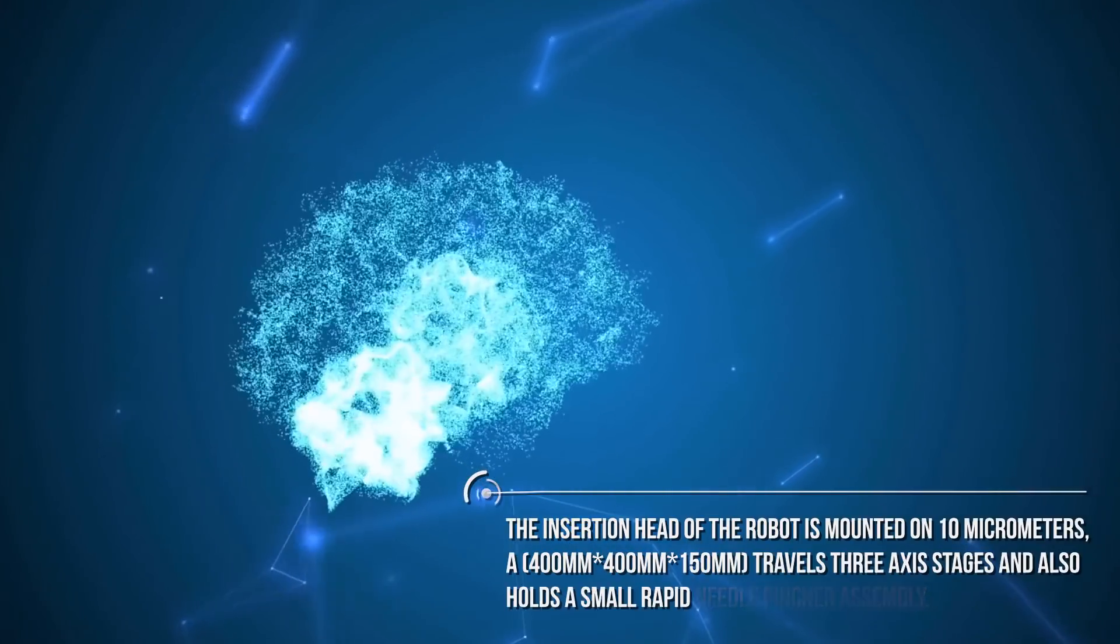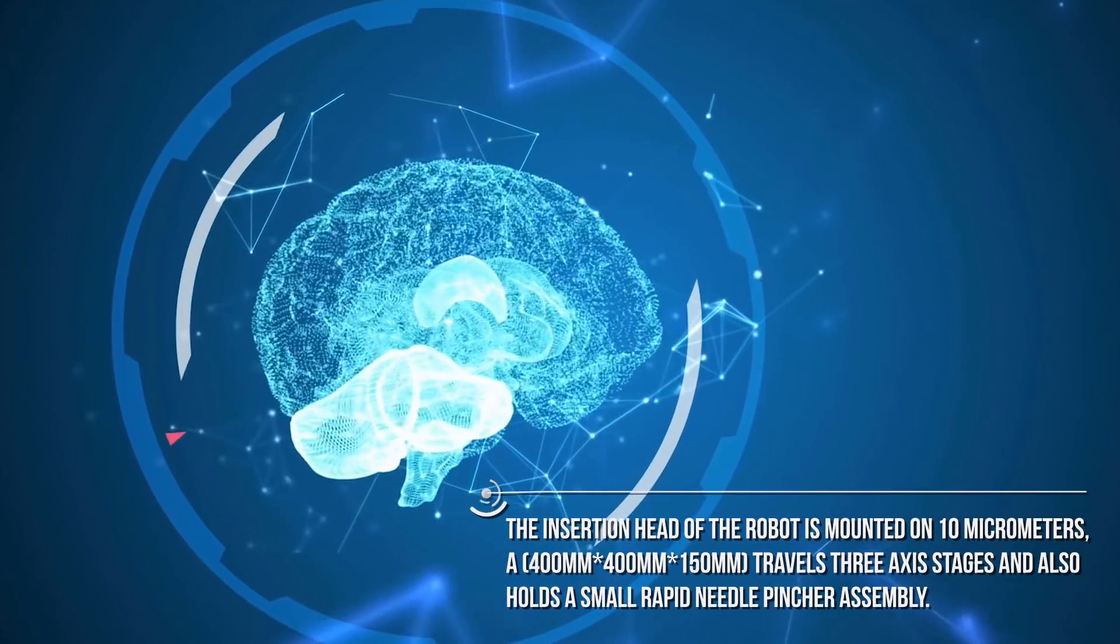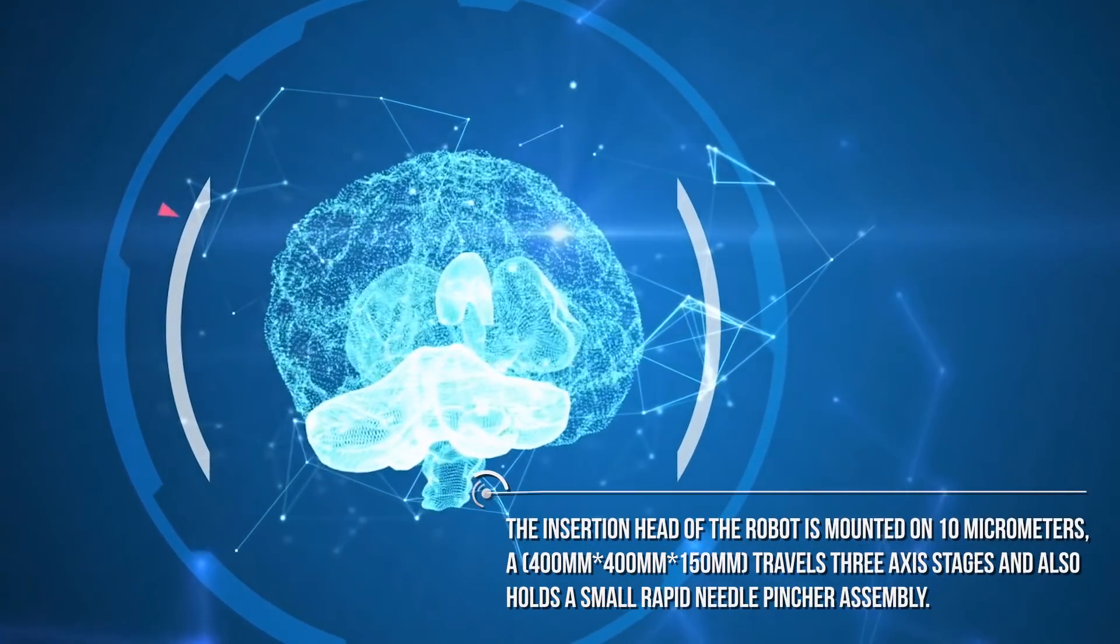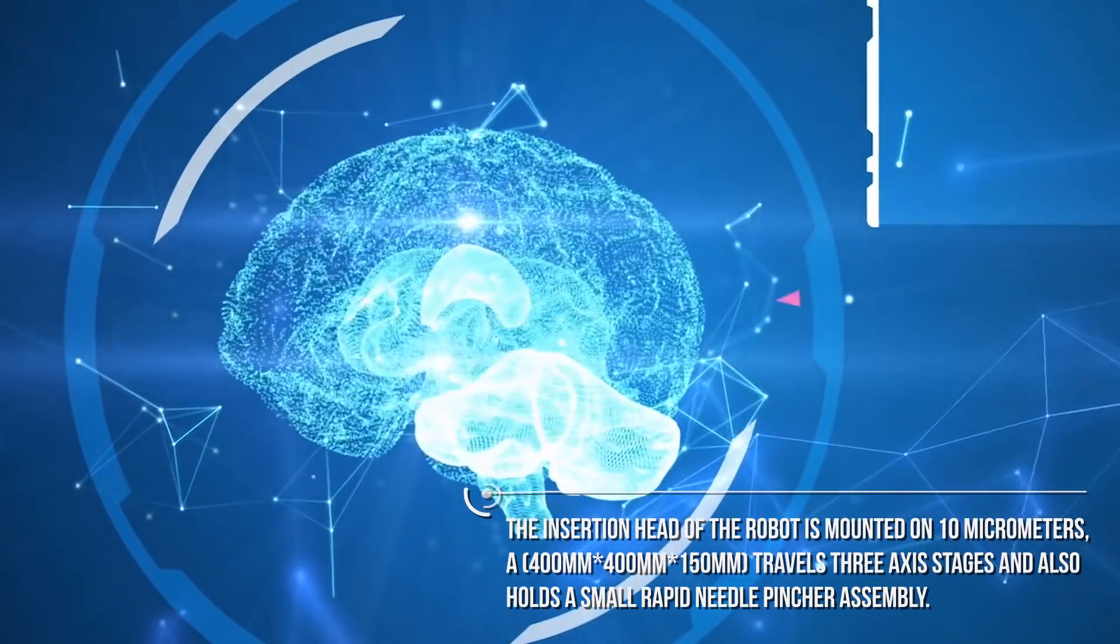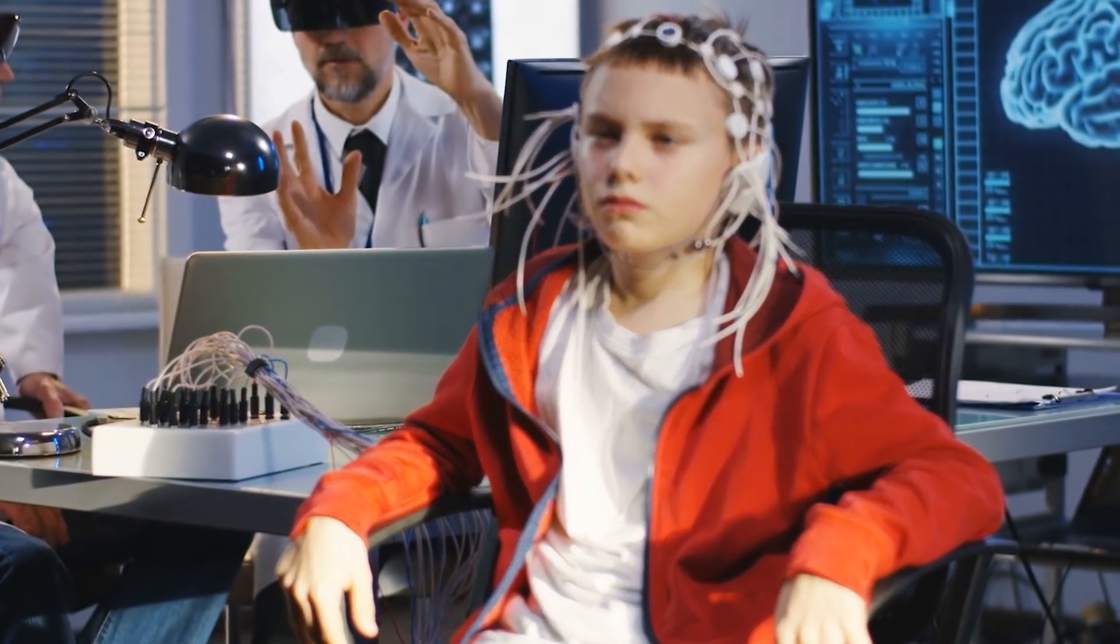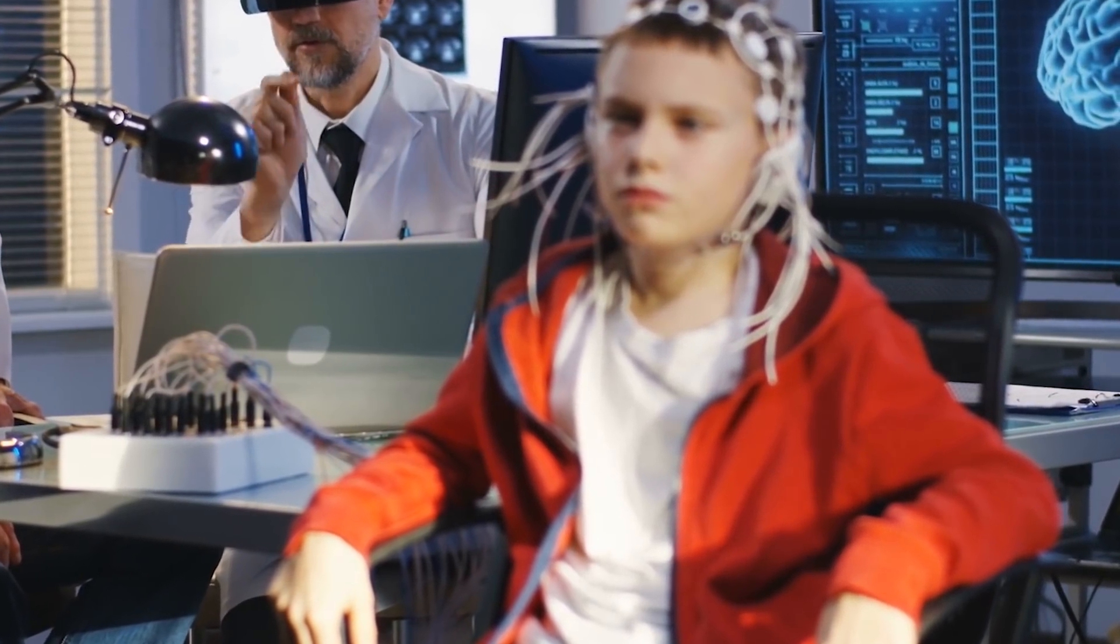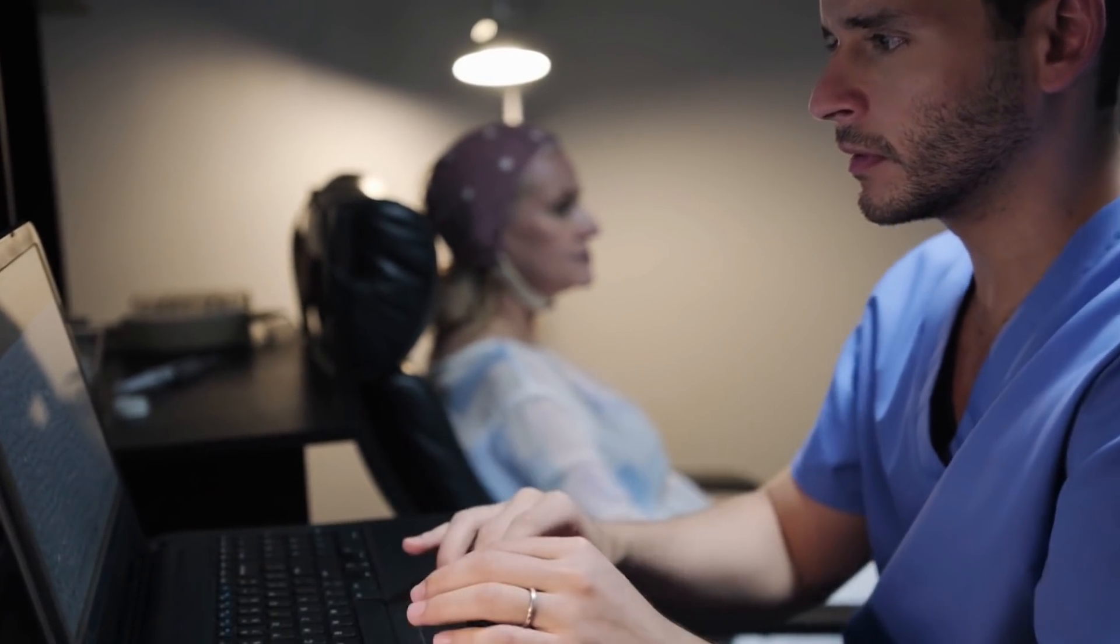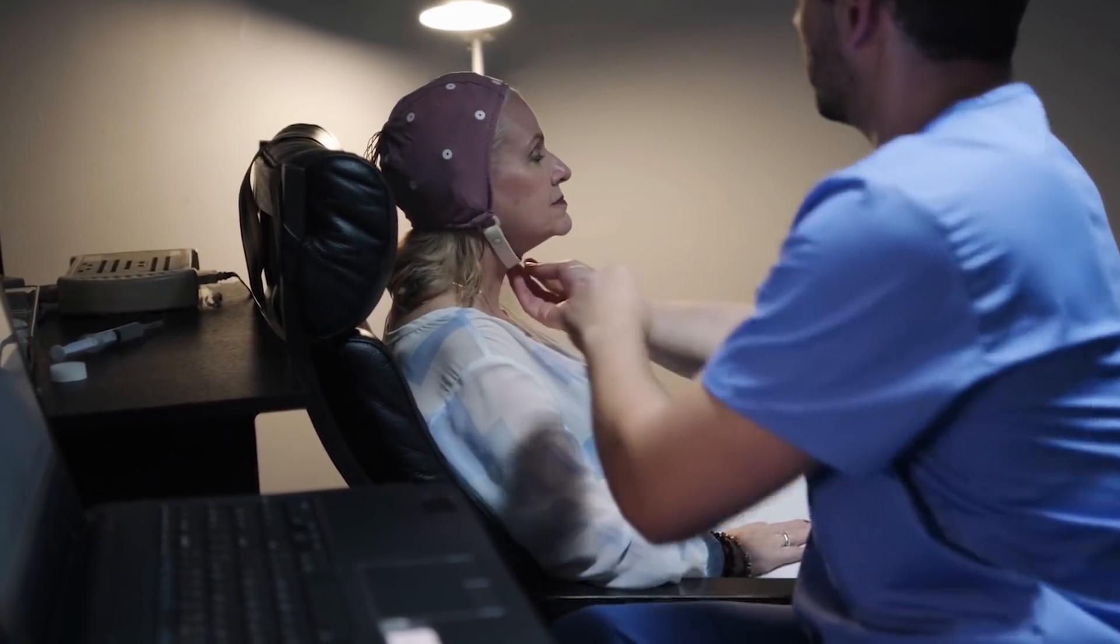The insertion head of the robot is mounted on 10 micrometer, 400 mm x 400 mm x 150 mm travel three axis stages and holds a small rapid needle pincher assembly. The needle has a diameter of 40 micrometers made of tungsten rhenium wire stock etched to 24 micrometer diameter along the inserted length. The needle tip is specially designed to transport and insert individual threads while providing easy penetration of brain tissue.